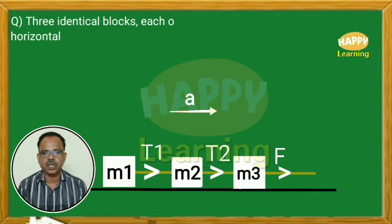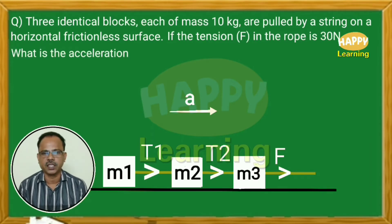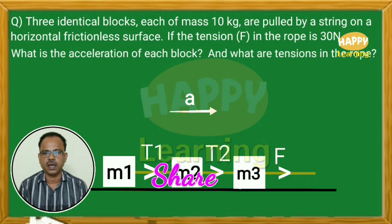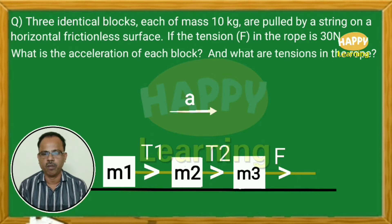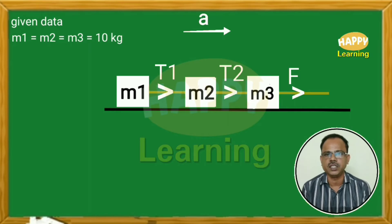Three identical blocks, each of mass 10 kg, are pulled by a string on a horizontal frictionless surface. If the tension F in the rope is 30 newton, what is the acceleration of each block? There are three blocks M1, M2, M3 pulled by a force F, and the system moves with acceleration A. Given data: M1 equals M2 equals M3 equals 10 kg, F equals 30 newton.